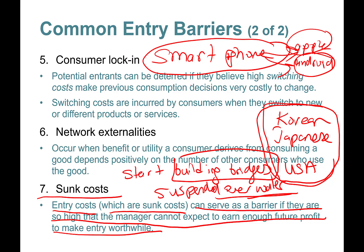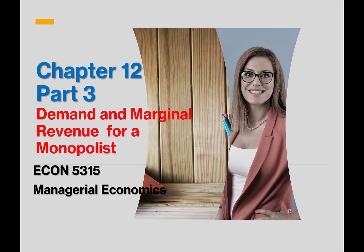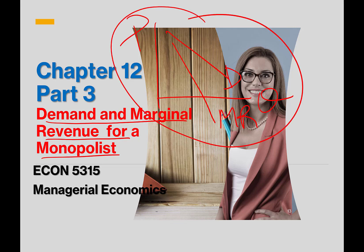Those were the barriers to entry. Next we'll talk about demand and marginal revenue for a monopolist, and we'll continue discussing the demand curve we started in Part 1. See you then.